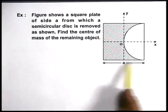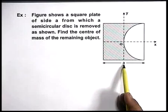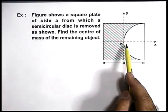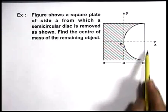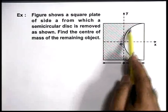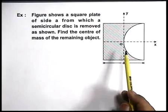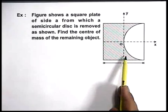Here we can see that there is a square plate of side a, and the centre of which is placed at the origin of the coordinate system shown here, and from right half of the plate, a semi-circular disc is cut and removed. So we are required to find the centre of mass of this remaining object.